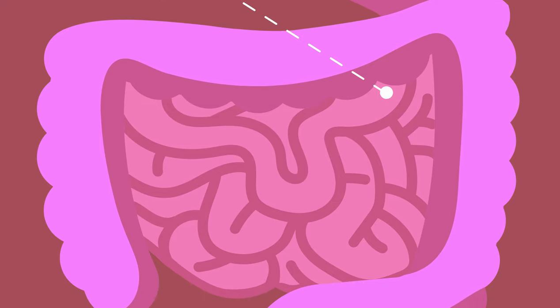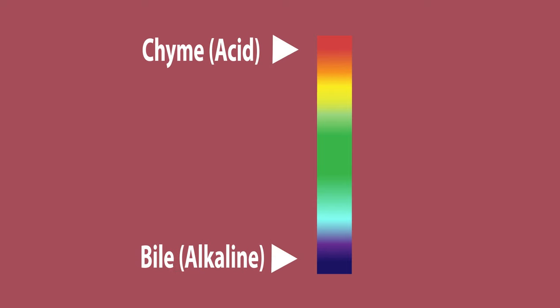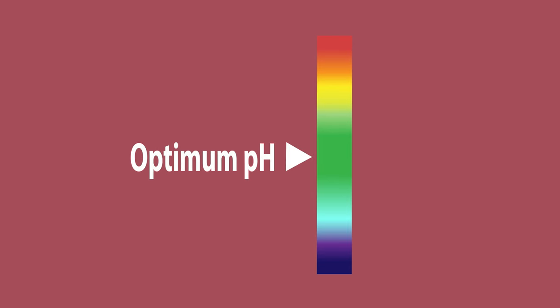It's alkaline. This helps to neutralize the strong hydrochloric acid which is added to the chyme and provides a more optimum pH for enzymes in the small intestine to work in.